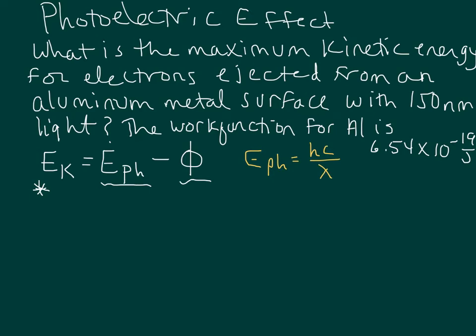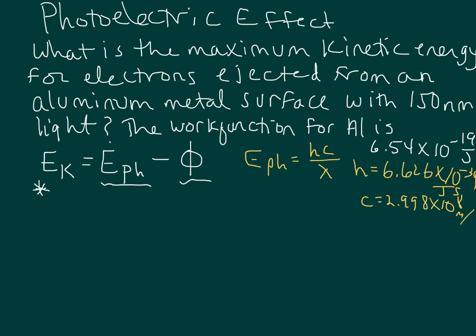Lambda is the wavelength, and h is Planck's constant: 6.626 times 10 to the negative 34 joule seconds. And c is the speed of light: 2.998 times 10 to the eighth meters per second. So let's remind ourselves of that.